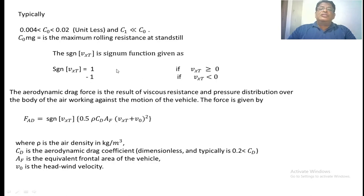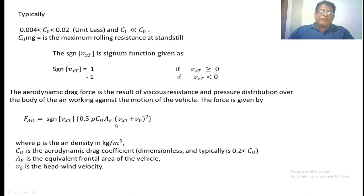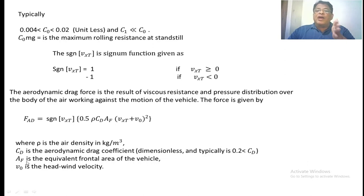Moving to the aerodynamic drag force: Fad = signum(vxt) × 0.5 × rho × Cd × Af × (vxt + v0)², where rho is the air density in kg/m³, Cd is the aerodynamic drag coefficient (dimensionless, less than 0.2), Af is the frontal area of the vehicle, and v0 is the wind velocity. The signum function of vxt is applied here using the same definition as before.